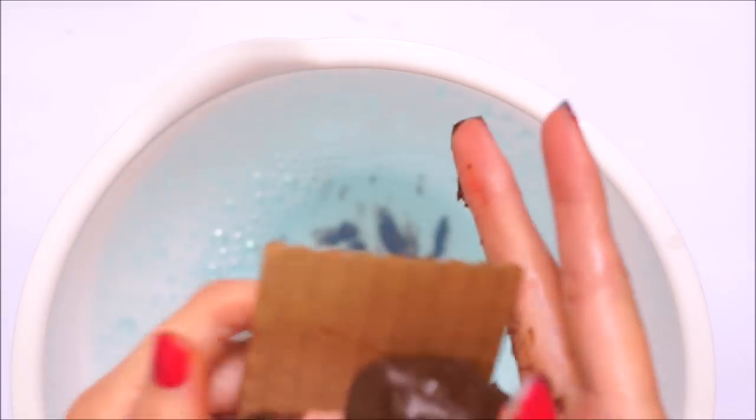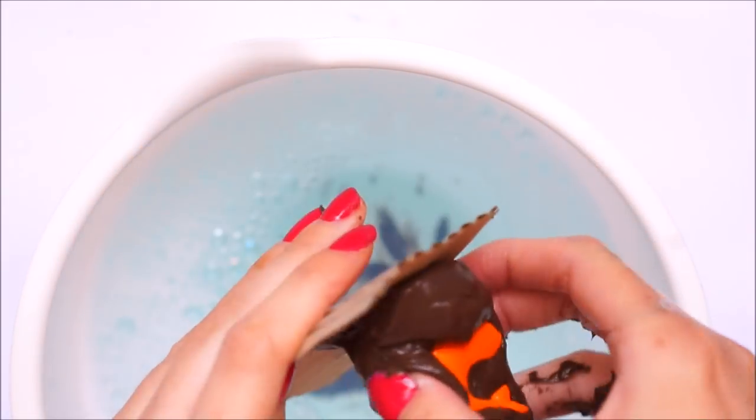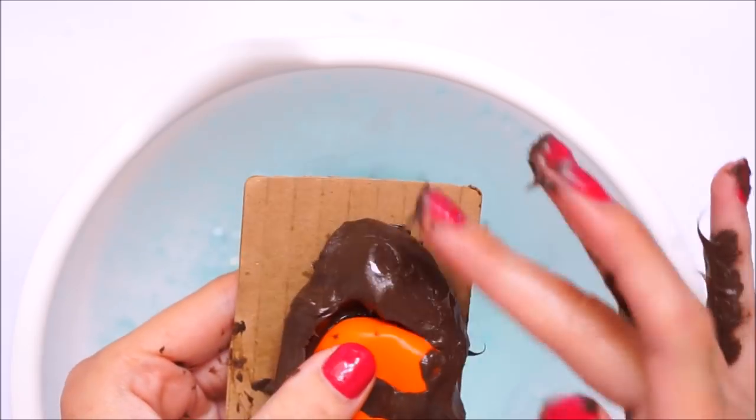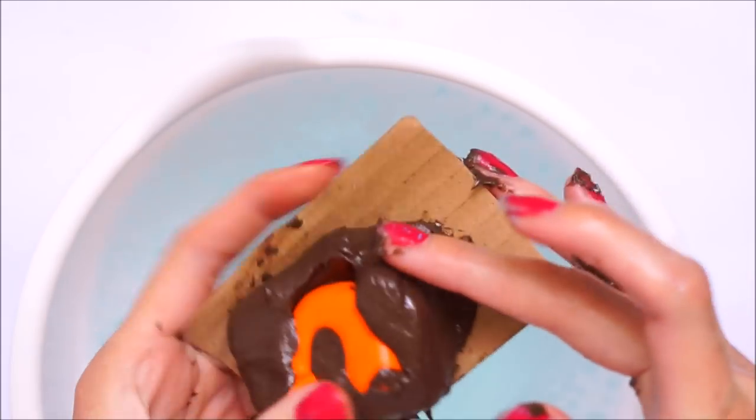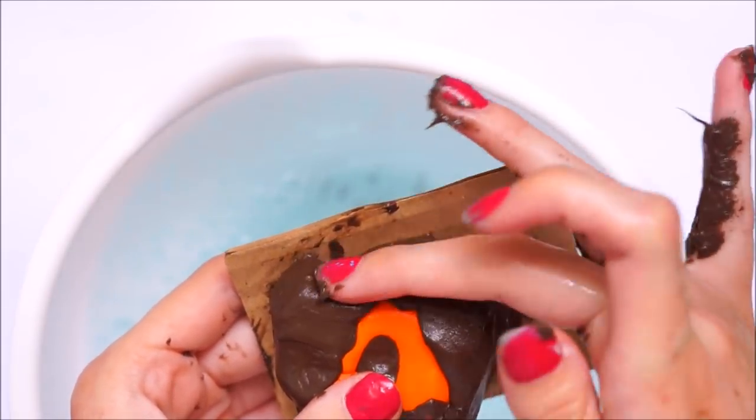I just then molded the silicone around all the edges, and then I actually decided to pop it onto a bit of cardboard because the washing up liquid must have deteriorated or something because it started sticking to my hand. I popped it down onto a piece of cardboard and then just molded it around the shrimp again, and then I let that to dry overnight.